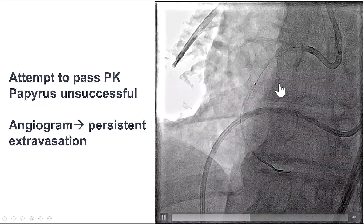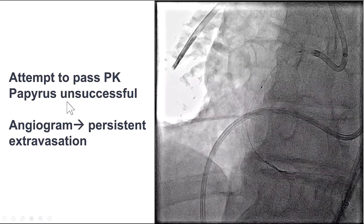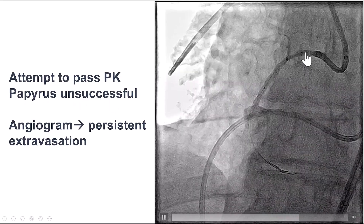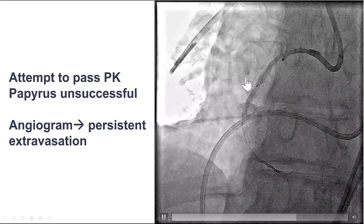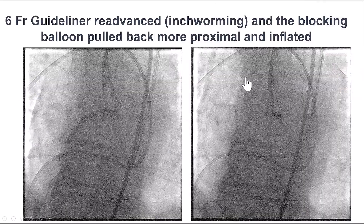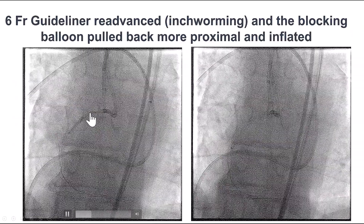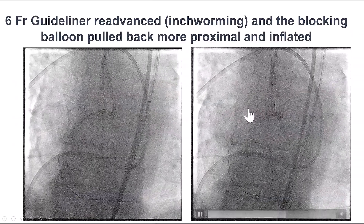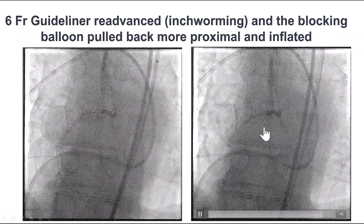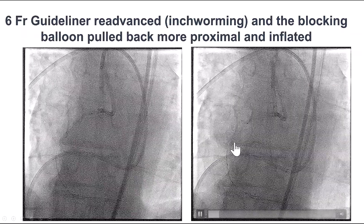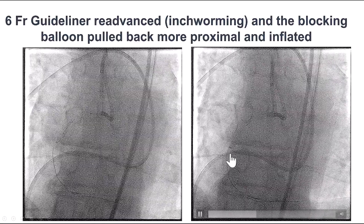The idea was to provide more support for delivering a Papyrus covered stent, but unfortunately we were unable to deliver the Papyrus — it would not go past the mid-right coronary artery. So we moved the guide extension, the GuideLiner, further down using the inch-worming technique, until the GuideLiner was all the way in the mid-RCA.